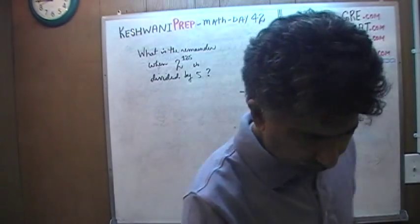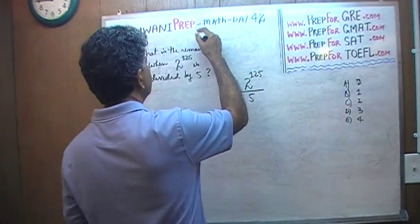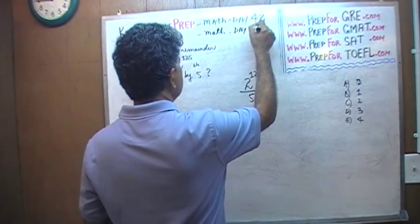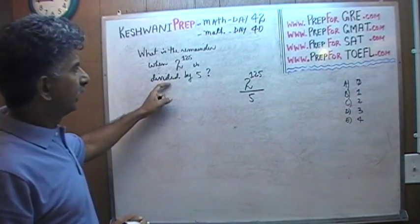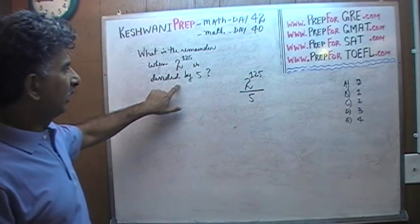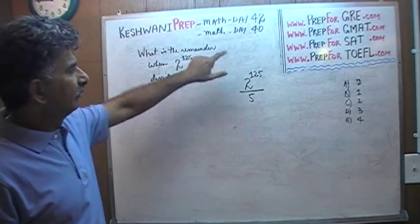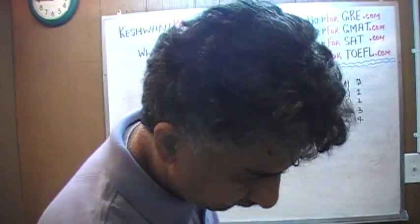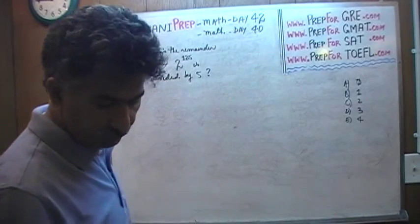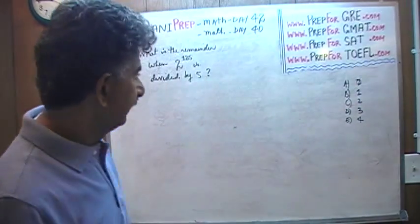Alright. The problem I gave you — I mentioned a similar problem on day number 40, one that was a little bit simpler. That's why I gave you that one first, so you could try the simpler one before tackling this one. So let's do this together: 2 raised to 125 — what's the remainder?